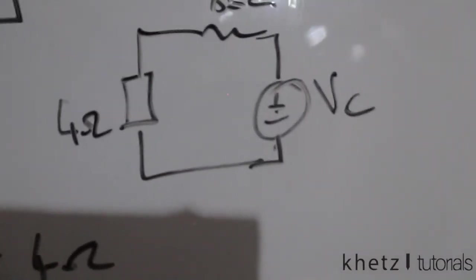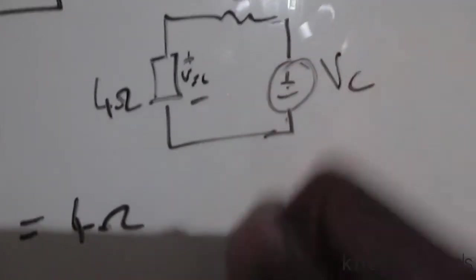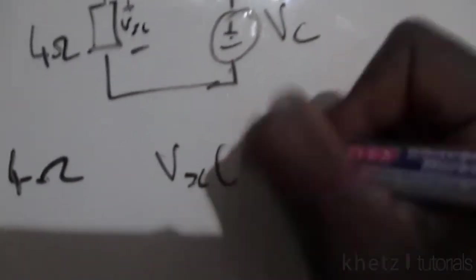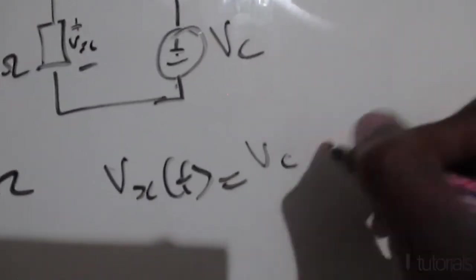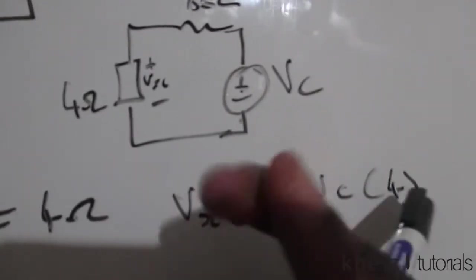Therefore we can do voltage division. To find our Vx which is located over here, we're going to say Vx(t) equals Vc multiplied by 4, which is the resistive value of the parallel combination.